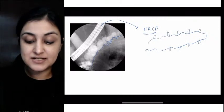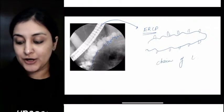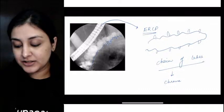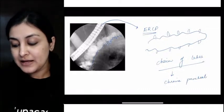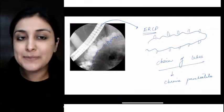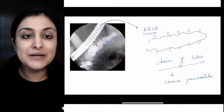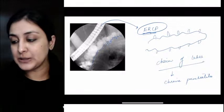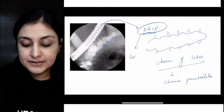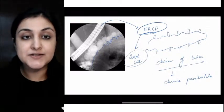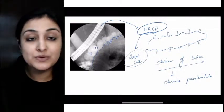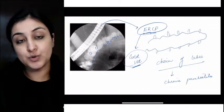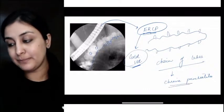This is called chain of lakes appearance and this is seen in chronic pancreatitis. What happens in chronic pancreatitis is that the complete pancreatic parenchyma is atrophic. The complete duct becomes very dilated with opening up of the side branches. That is what we will see on ERCP. Remember ERCP is the gold standard for chronic pancreatitis. It is because we can remove the stones. A lot of times stones will form in the duct. We can remove them, we can put in a stent if there is any obstruction. So this is gold standard ERCP for chronic pancreatitis.